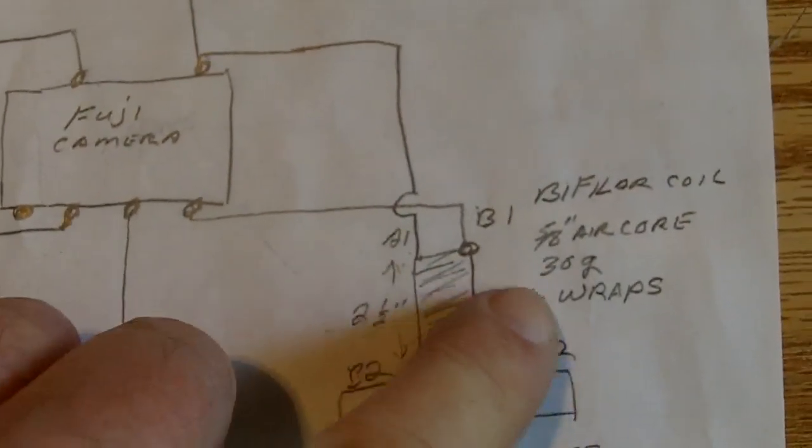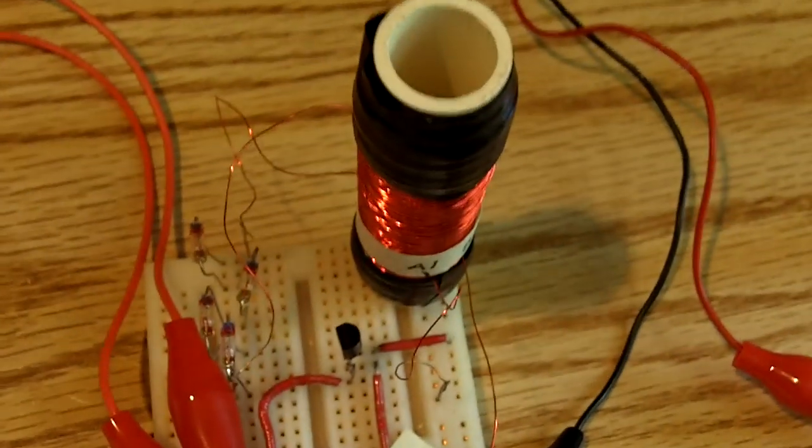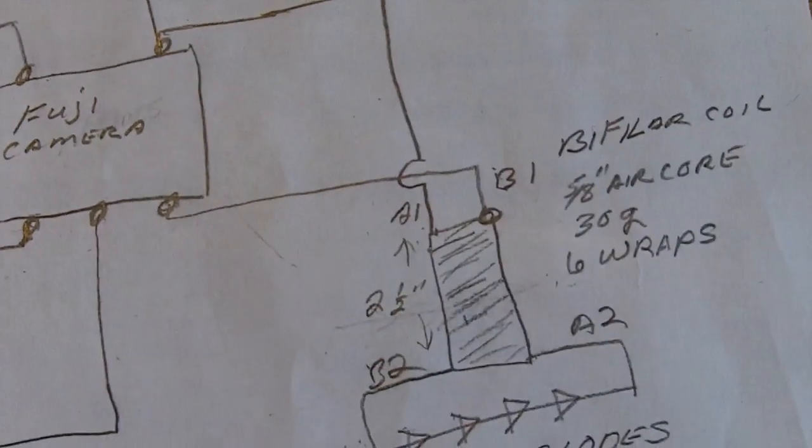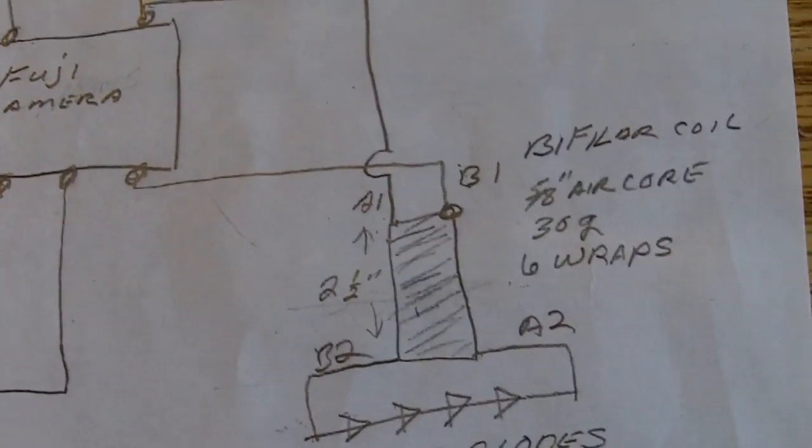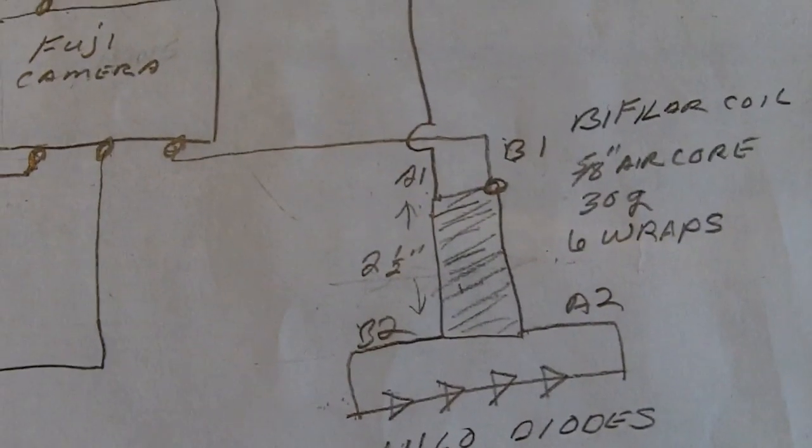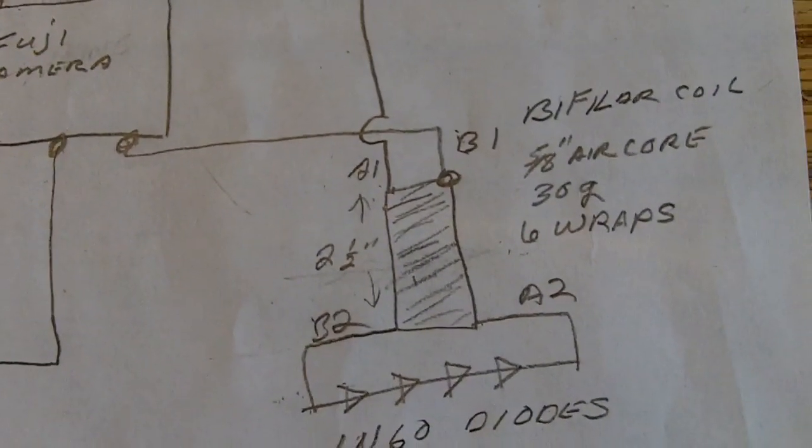My little bifiler coil I put together right there. It's two and a half inches tall. It's got six wraps of 30 gauge wire on it, 5/8 core air core.